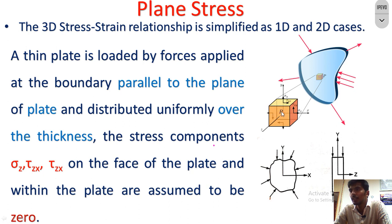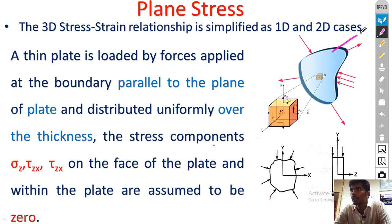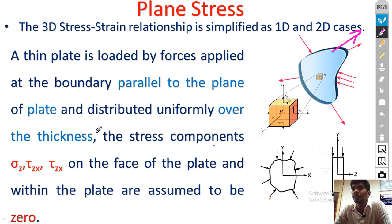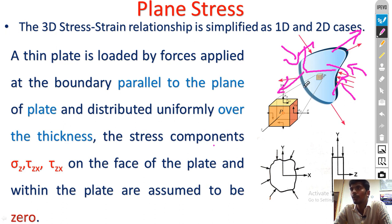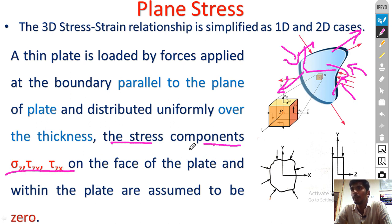In the 3D case you can see the thickness direction, but in the 2D case you cannot see the thickness direction. The load should be distributed throughout the thickness direction — that is very important. The stress component along the z direction is 0, because we are applying the load only along x and y; along the z direction there is no load. If there is no load, automatically the output parameter is also 0. Therefore, the stress component along the z direction equals 0. This is the main assumption of plane stress.